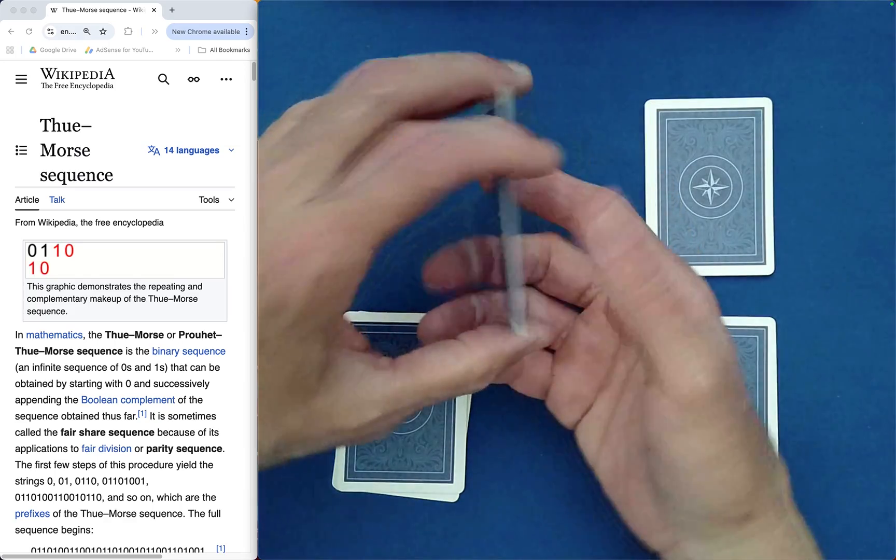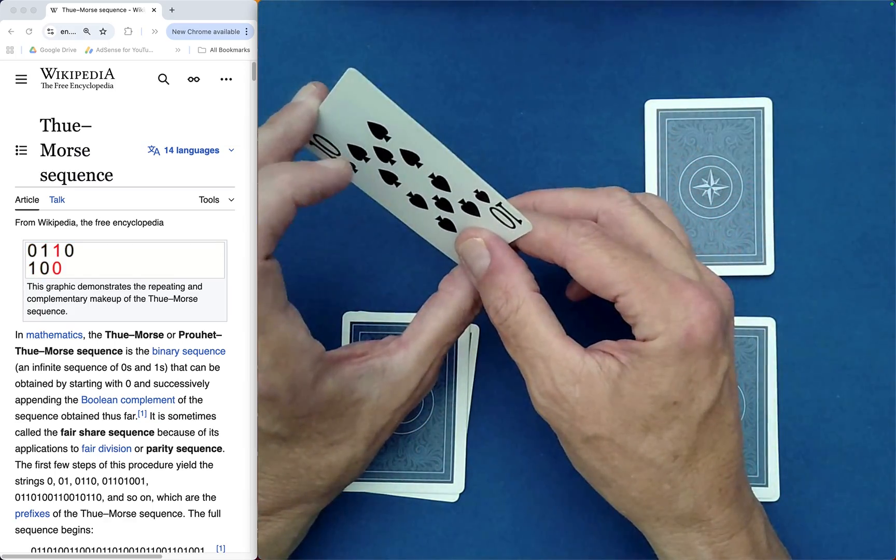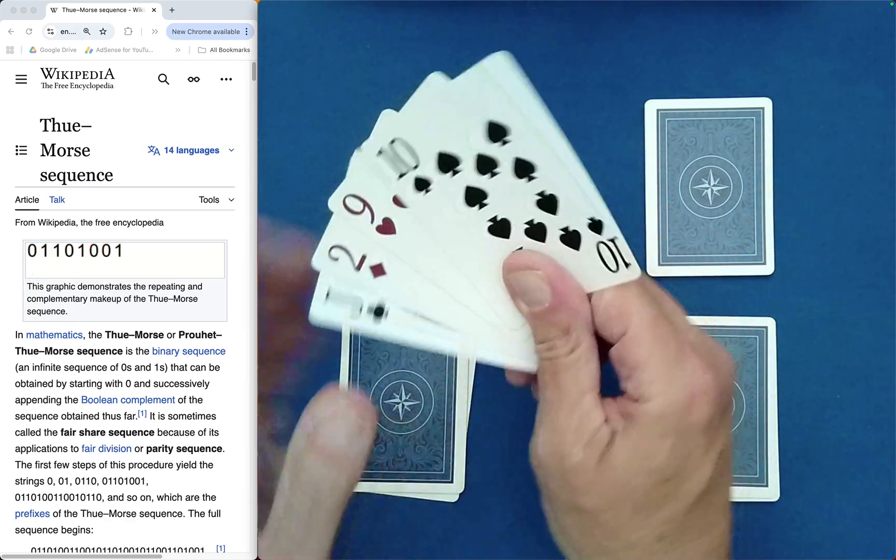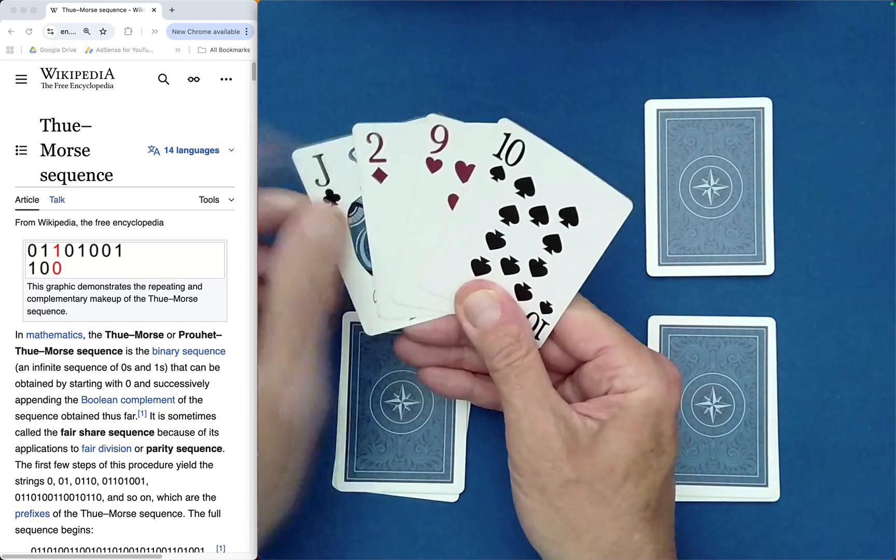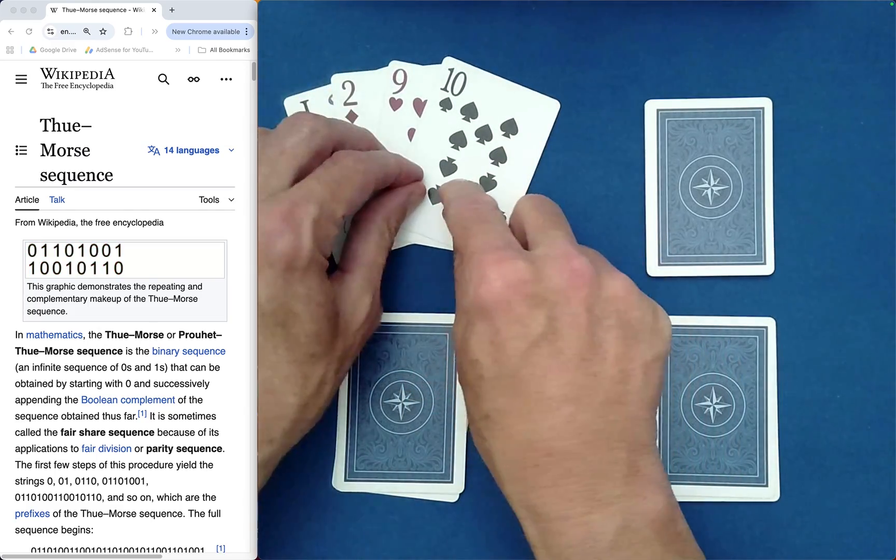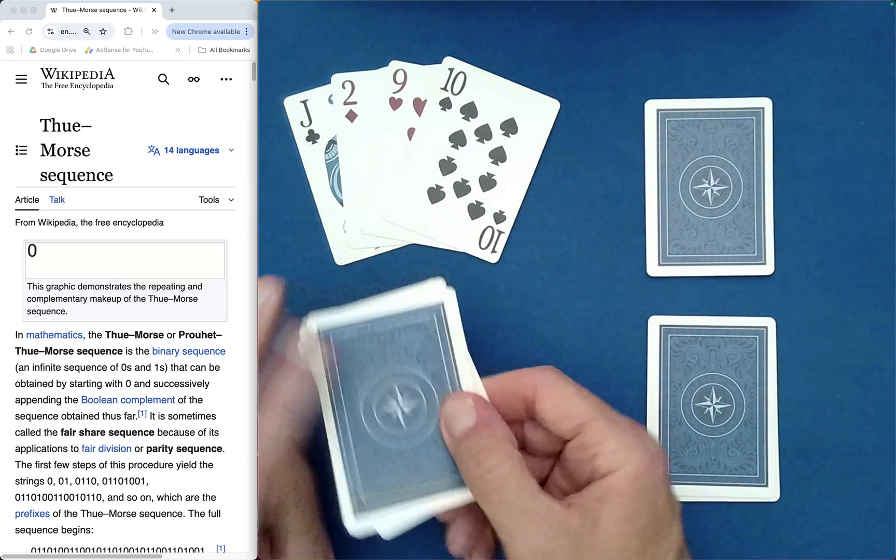So this is like Spectator 1. Did they receive one of each suit? That was kind of the hope. Club, heart, spade, diamond. Yes, they did. They're walking away pretty happy.